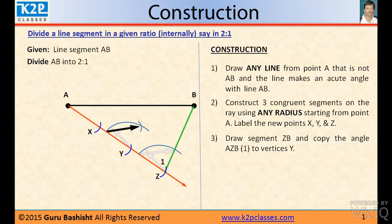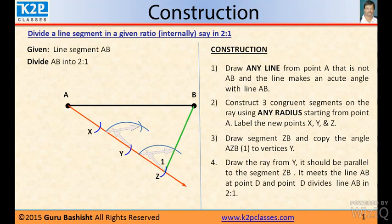And make that point, join the point with Y, and extend the line. And see the line cuts the original line AB at some point D. And D is the point which divides line AB in 2:1.